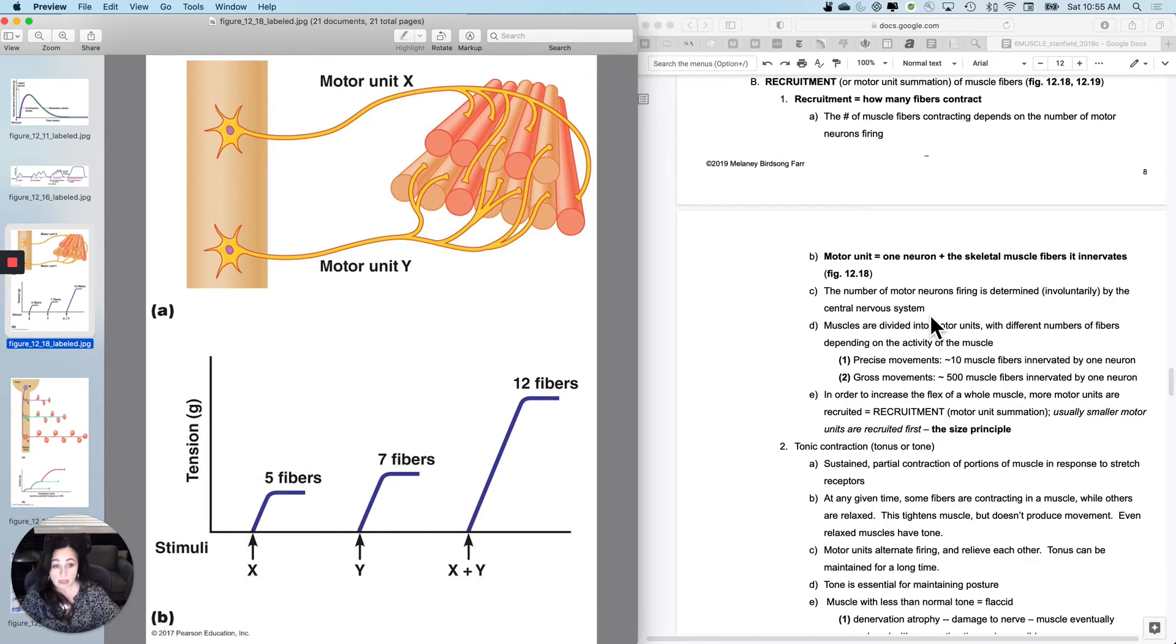So the number of motor neurons firing is determined involuntarily by the central nervous system. What generally happens because the body is frugal is that you usually recruit the smaller motor units first. So you would do X, which had five fibers. And if that didn't work, you would do Y, which had seven fibers. And then if that didn't work, you would do X plus Y, which is 12 fibers. So this is called recruitment. This is how you get a whole muscle to contract minimally, maximally, or not at all.